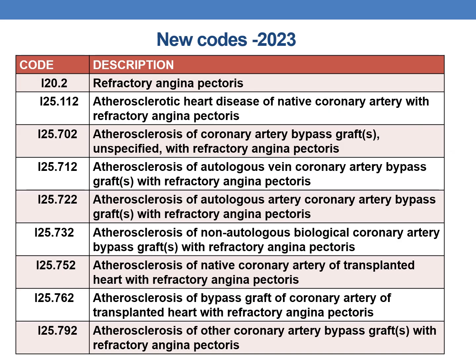Let us look at the new set of codes that have been added. The first new code is for refractory angina pectoris, that is I20.2. There are also combination codes for atherosclerotic heart disease and angina. Since a new angina code I20.2 for refractory angina pectoris has been added, other combination codes have also been added.